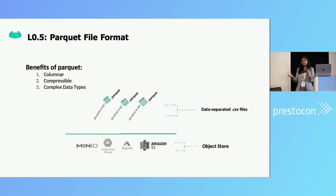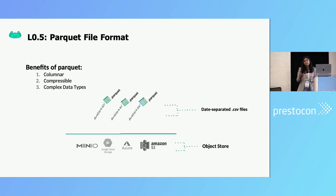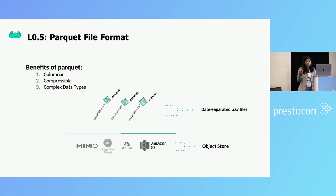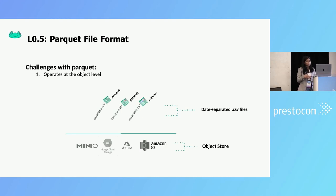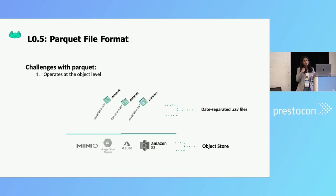Second, Parquet gave us a highly compressible option. And third, it supported different complex data types compared to basic files. But the one challenge we have with Parquet files is that it still operates at the file level or the object level, meaning if you want to make any sort of changes, you're doing changes for the whole object.